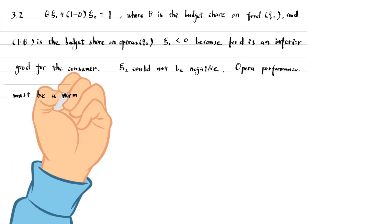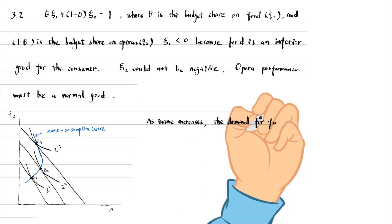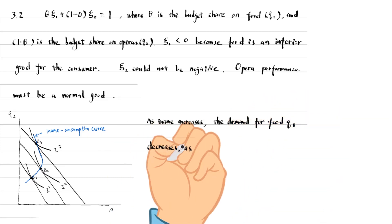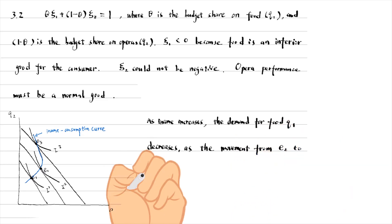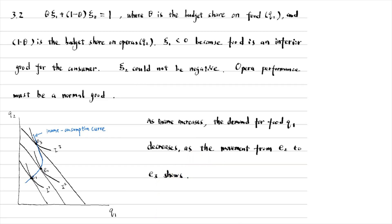We can draw the indifference curve budget constraint diagram to show the income consumption curve. As income increases, the budget line shifts to the right. The highest possible indifference curves are tangent to the budget lines at E1, E2, and E3. As income increases, the demand for food decreases at a particular part, as the movement from E2 to E3 shows. In this range, food is an inferior good — its consumption reduces as income increases. If we look at the whole range, the income consumption curve for food is backward bending.